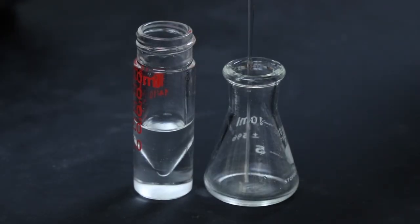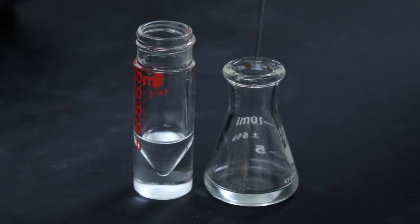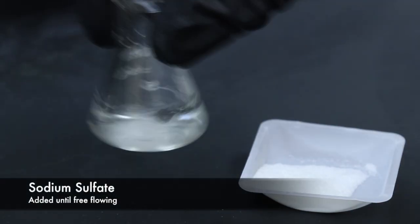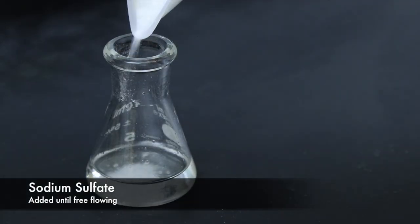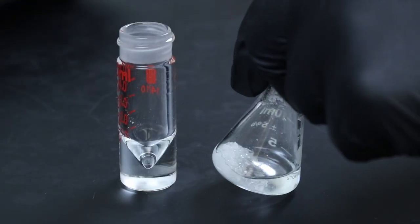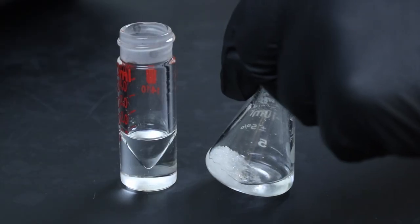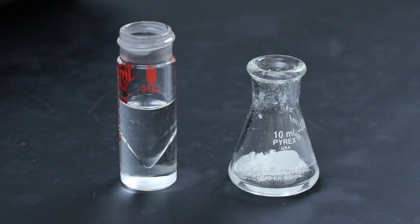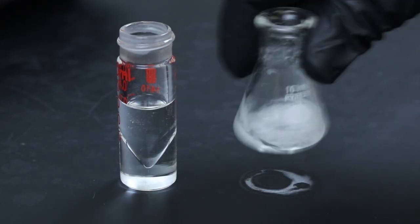Now I'll move the ether solution over to an Erlenmeyer flask, where I can dry it using sodium sulfate, and I'll add that until it is free flowing. Once it is free flowing, I can remove the solution from the Erlenmeyer flask, and then to reclaim more product from the sodium sulfate, I'll go ahead and rinse that again with some more diethyl ether.